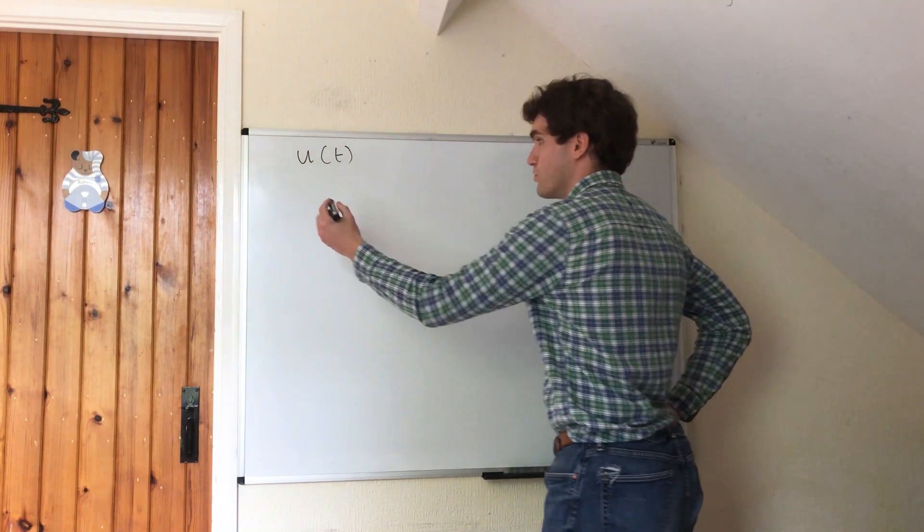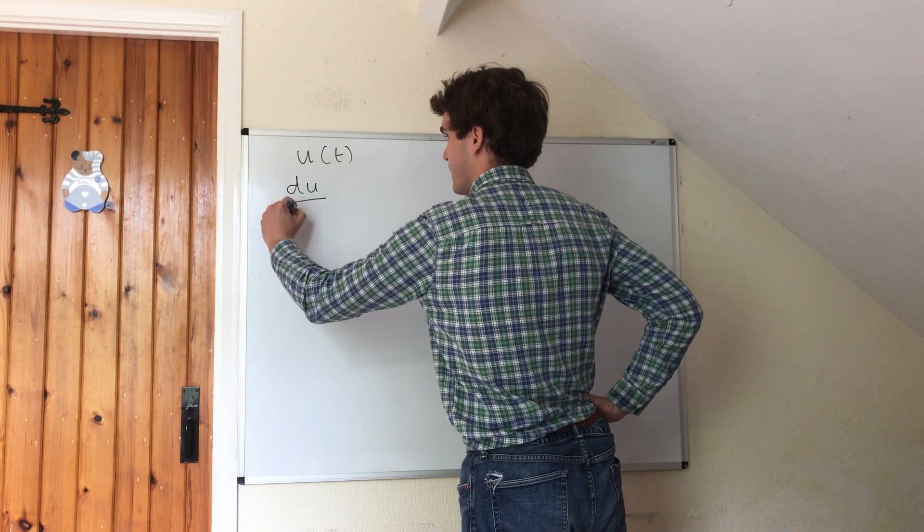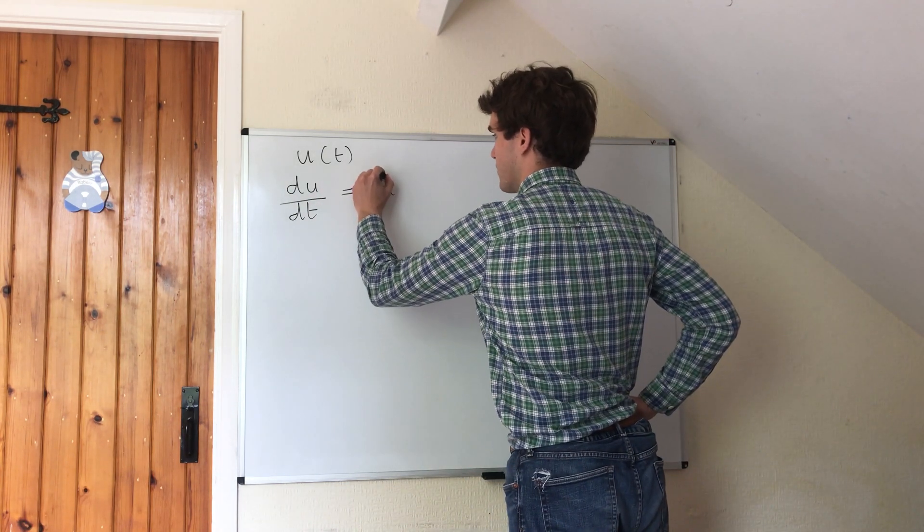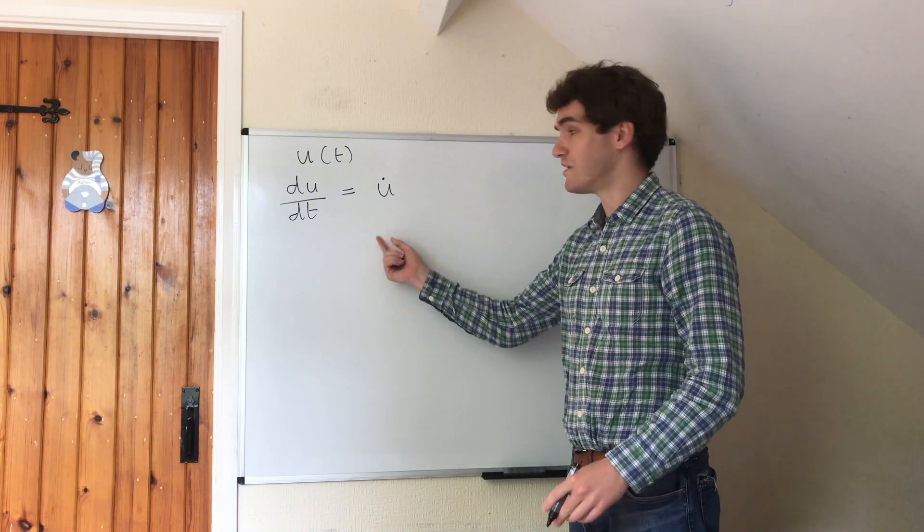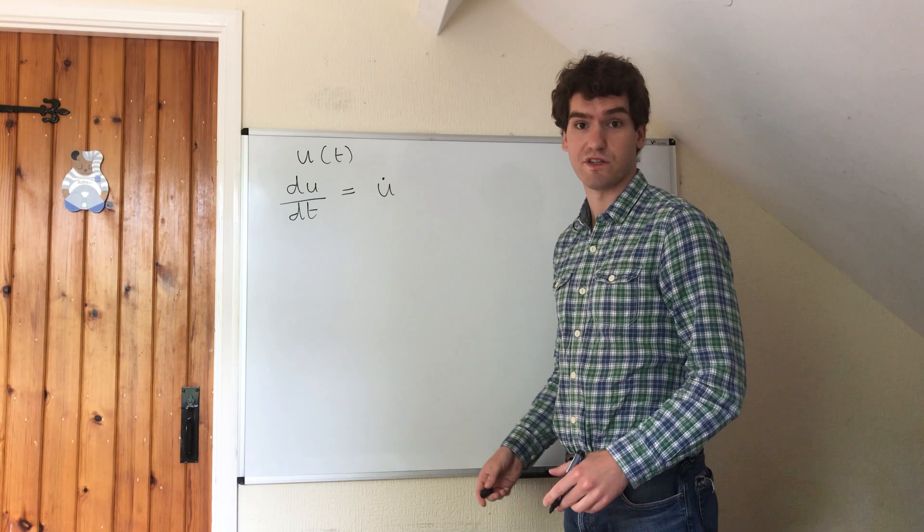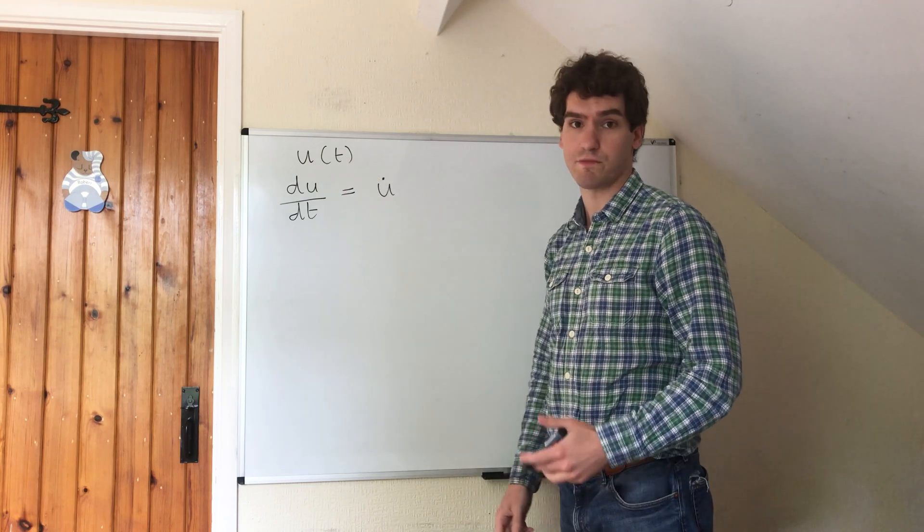In order to denote the first derivative with respect to time, we usually use Newton's notation. I will be using Newton's notation, where you simply put a dot for every time derivative which is being taken with respect to t.